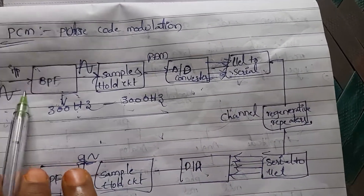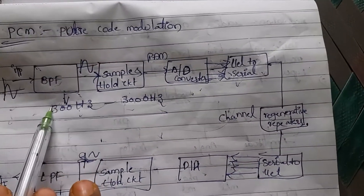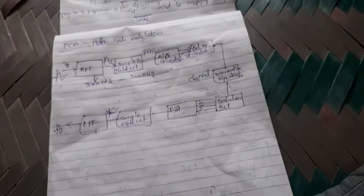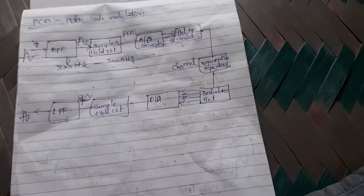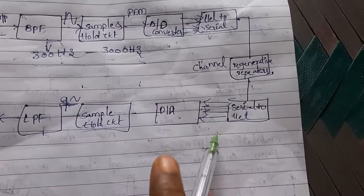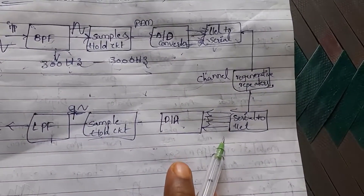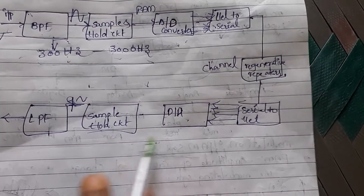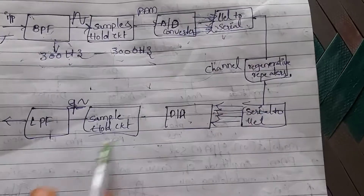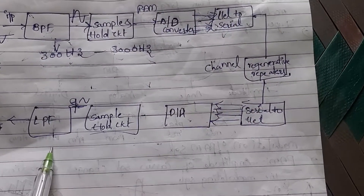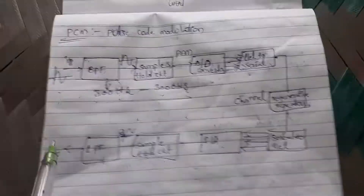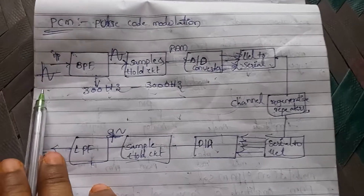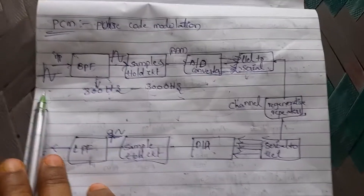On the receiver side, the operation is exactly the reverse of the transmitter. We use a Serial to Parallel converter, then a D2A (Digital to Analog) converter, followed by a Sample and Hold circuit, and finally a Low Pass Filter.